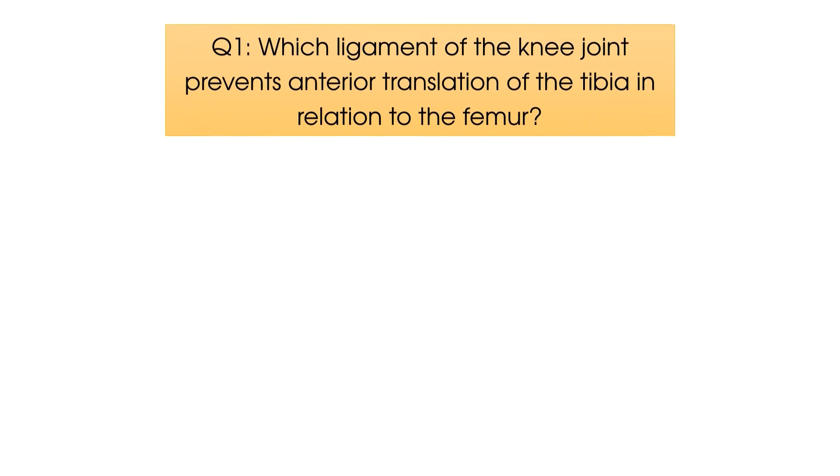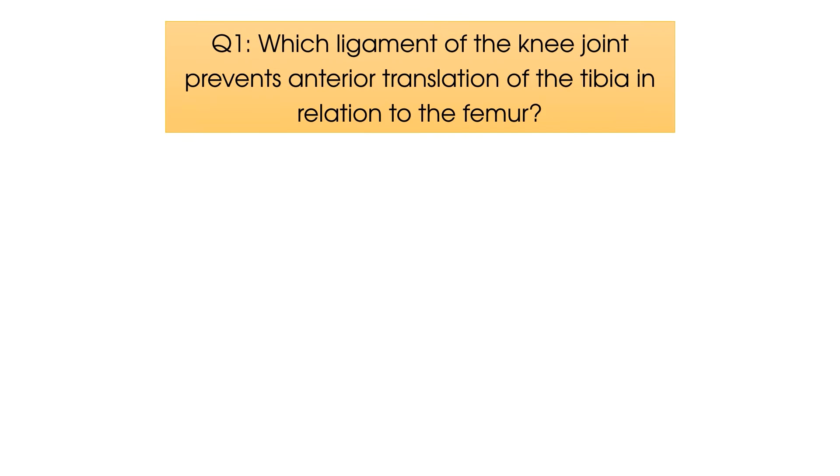Question number 1. Which ligament of the knee joint prevents anterior translation of the tibia in relation to the femur?